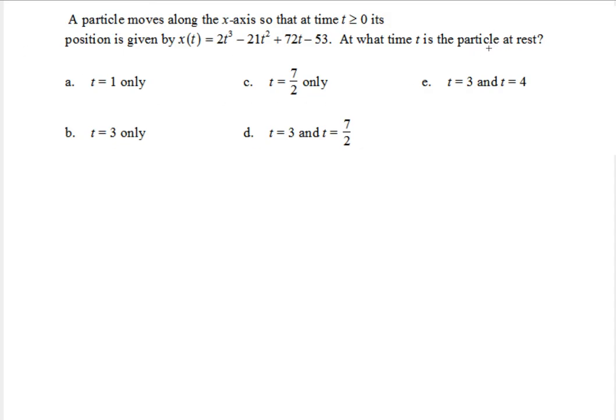So realize, first of all, that the particle is at rest when the velocity is equal to 0. Crucially, you understand that this is the position function, and in order to find the velocity, we need to find the velocity function. And the velocity function is the derivative of the position function. So we have to differentiate the right side here using the power rule for each term.